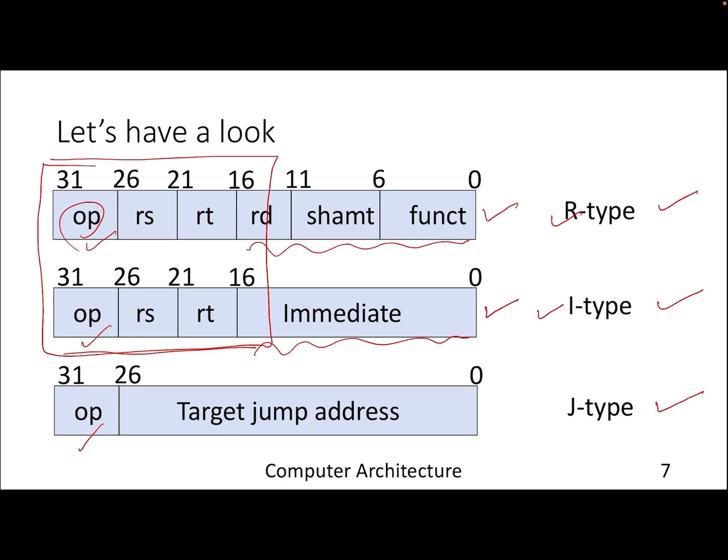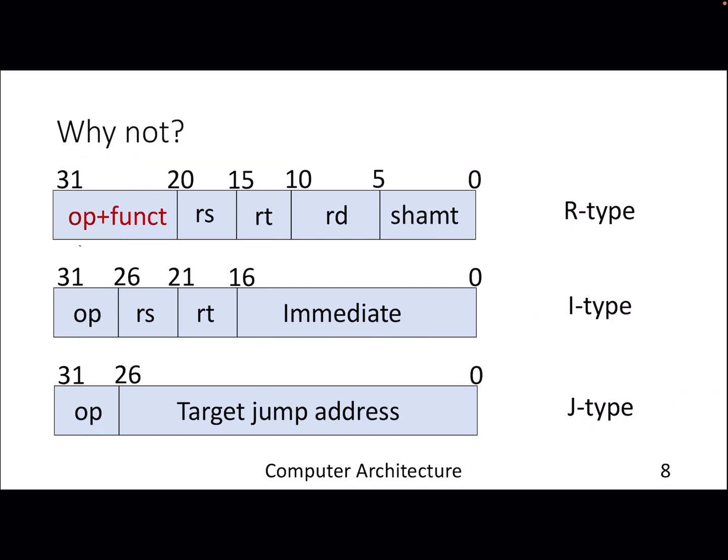Now if we remove this functionality field, which is a 6-bit field, and add it with this opcode field, which is also a 6-bit field, that means this will become a 12-bit field. That means it can denote 2 to the 12 operations. But MIPS doesn't include a 12-bit opcode. Instead, it goes for simplicity so that all kinds of instructions will have the upper 6 bits denoting the opcode. It makes the life of the processor, especially the decoder, simple. The moment it receives an instruction from the memory, it just extracts the upper 6 bits. That will tell you what to do.